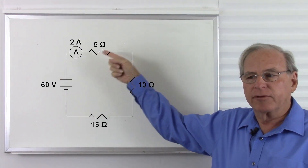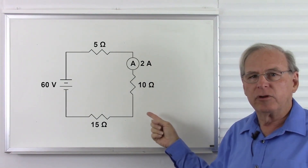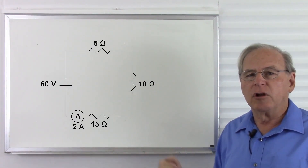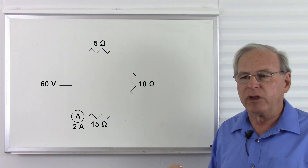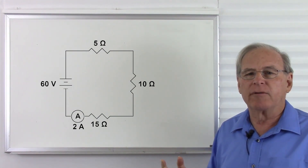No matter where we put our amp meter, we will see two amps — whether we put it here, or here, we see two amps everywhere in the circuit. So the current is the same everywhere.